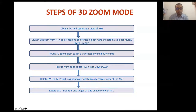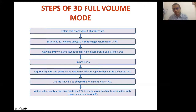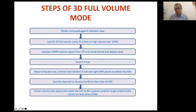Just as we keep the aorta at 12 o'clock for mitral interventions, we keep the SVC at 12 o'clock for ASDs. For the 3D zoom mode, obtain a mid-esophageal view, adjust regions of interest in both right and left multi-planar image panels, launch 3D zoom, and flip the front edge to get an en-face view, then rotate so SPC is at 12 o'clock. You can flip 180 degrees to get the LA view of the ASD. For 3D full volume, obtain an automated surface four-chamber view, launch 3D full volume, activate MPR volumes, and use iCrop to adjust box position and rotation to get the right lateral en-face view.